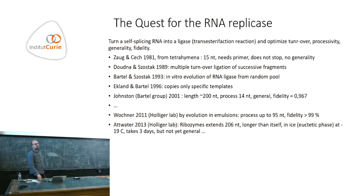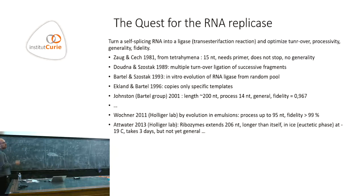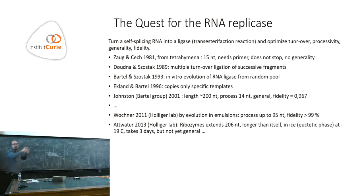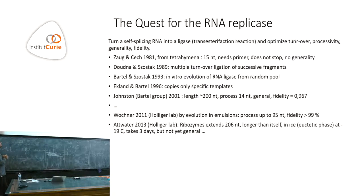There are people working on building a system that could do template-based replication from RNA — this is an ongoing quest in biochemistry. For the moment, such an object has not been found in nature. The adventure starts in the 1980s, where people took ribozymes from cells and re-engineered them to do some steps of polymerization. The group of Jack Szostak has done very ambitious experiments, selecting ribozymes from random pools and then doing directed evolution to increase processivity and fidelity of the polymerase.